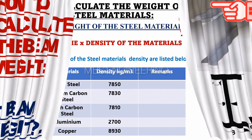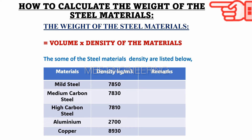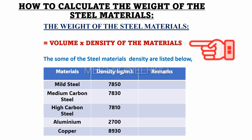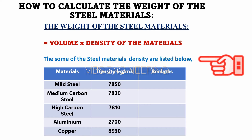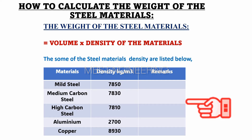We will learn how to calculate the volume and weight of mild steel materials. The weight of mild steel materials can be calculated by multiplying the volume of the material by its density. Here are the densities of some commonly used materials: mild steel, medium carbon steel, high carbon steel, aluminum, and copper.